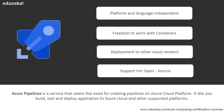Azure Pipelines is basically platform and language independent. If you have an application and you wish to run it on a particular platform, Azure gives you options for that — you can run it on Windows, Linux, or Mac operating systems. It is also language independent, meaning whether you are building a Node.js application or building in Python or some other programming language, you can build your applications using different programming languages and run those on different platforms as well.